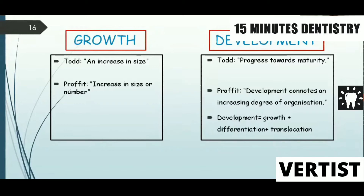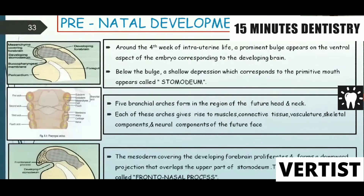Development is focused towards maturity — that is, development involves growth, differentiation, and classification. We move on to point number 6, which is the prenatal and postnatal growth of the maxilla and mandible.